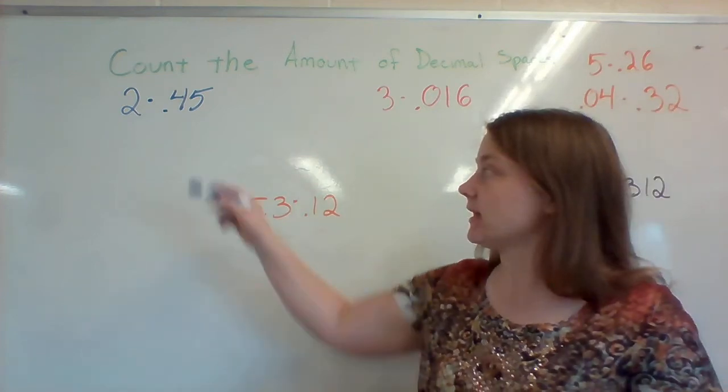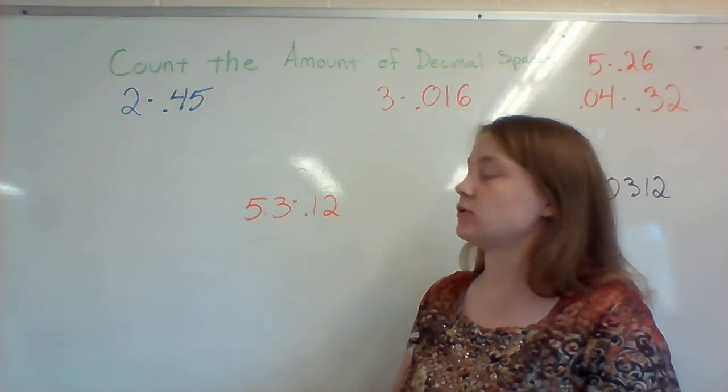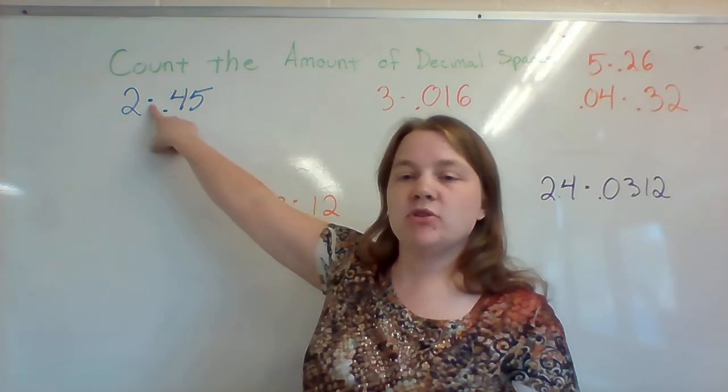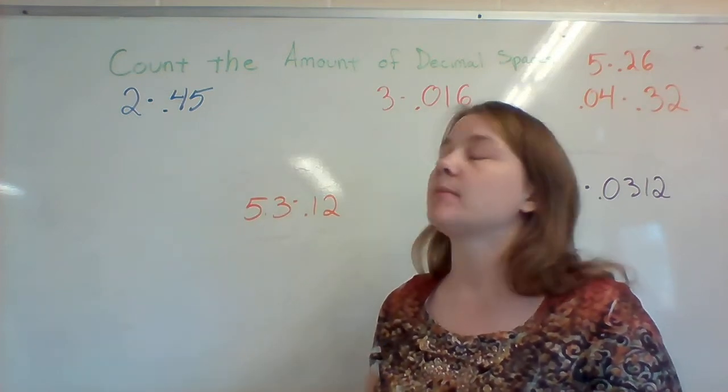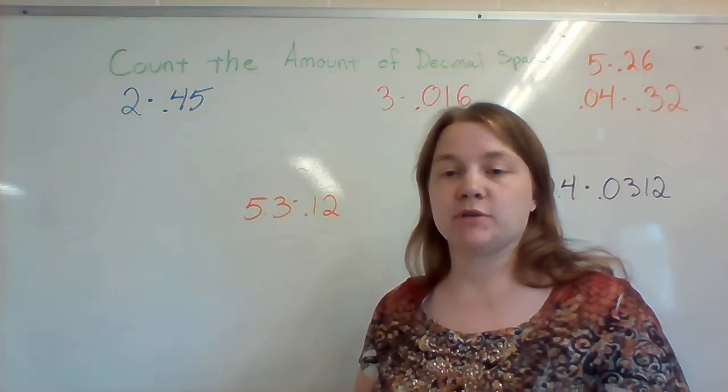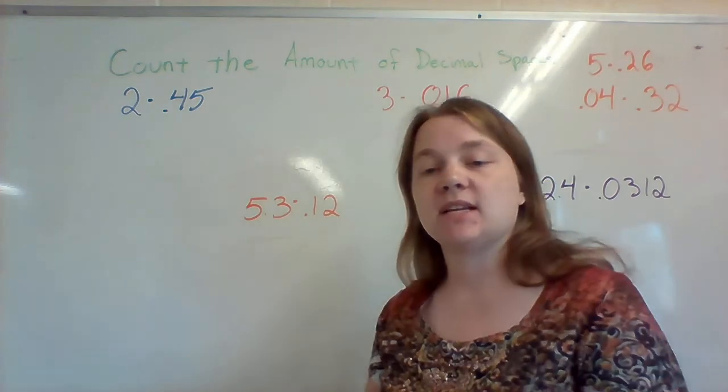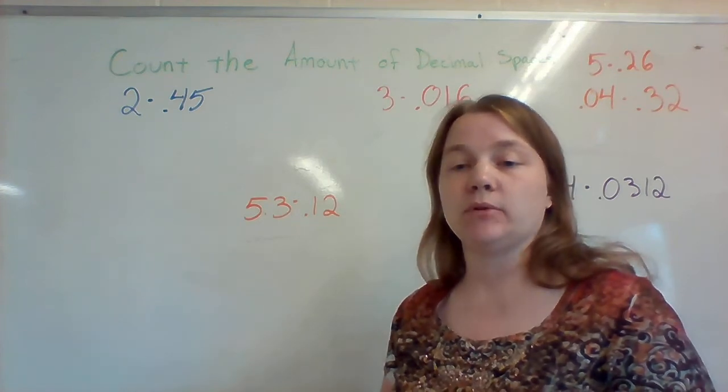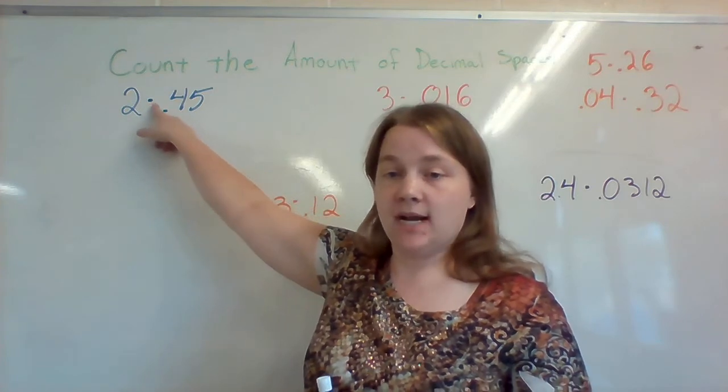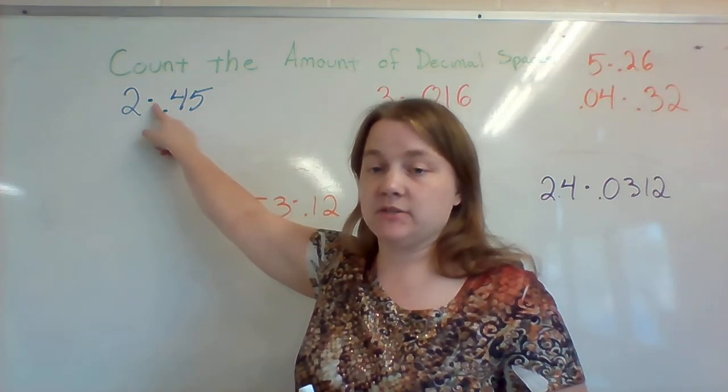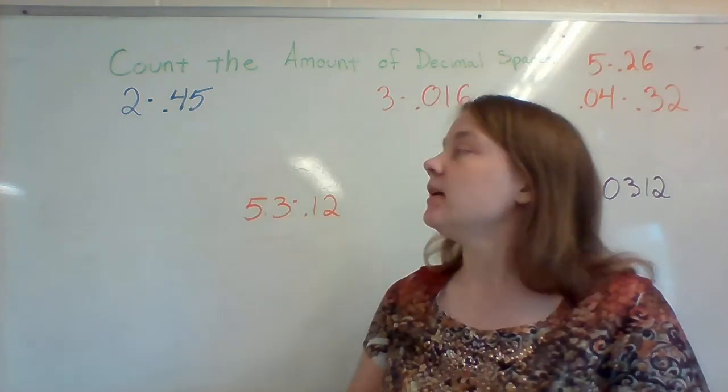So let's take a look at what that's going to look like. We have 2 times 0.45. Now the first thing that you need to know is I'm using a dot for the multiplication sign. That is a very common mathematical sign for multiplication instead of using the x because the x can be mistaken for a variable. So they use a dot instead. You have to be very careful if you use a dot that your multiplication dot is floating so it doesn't get confused with your decimal.